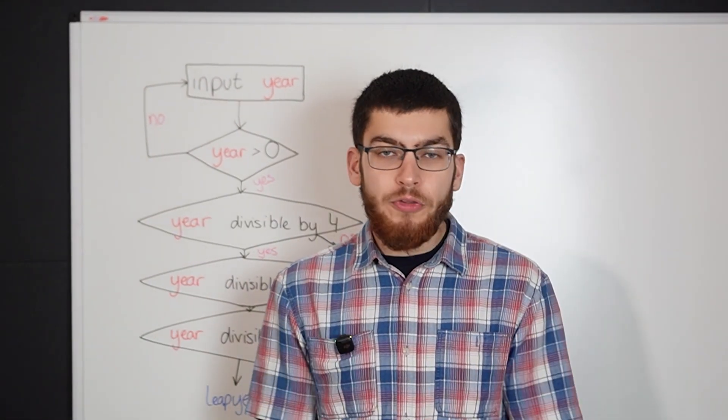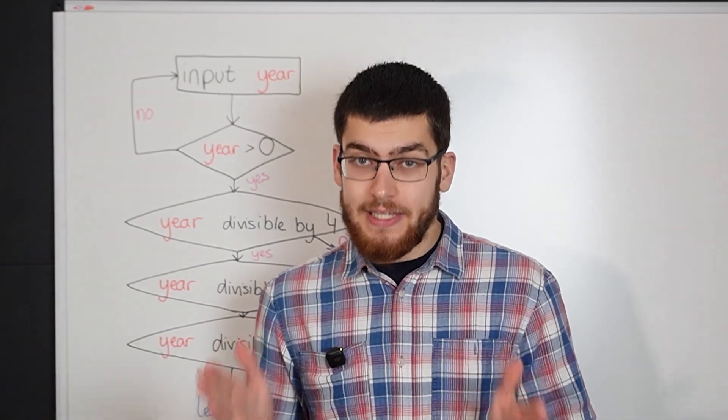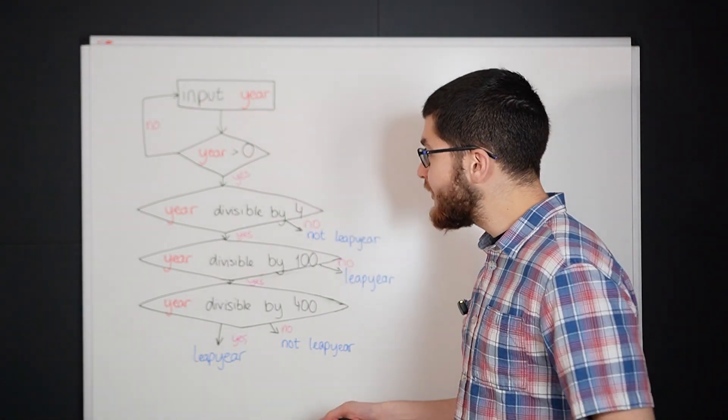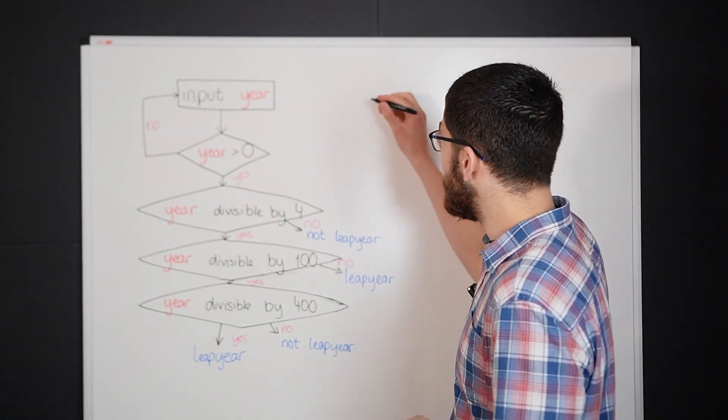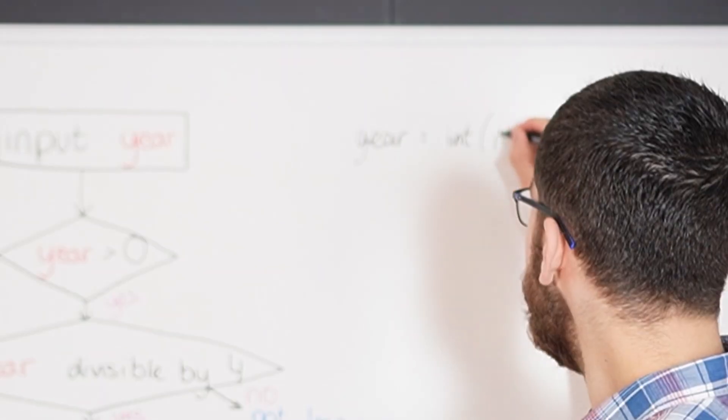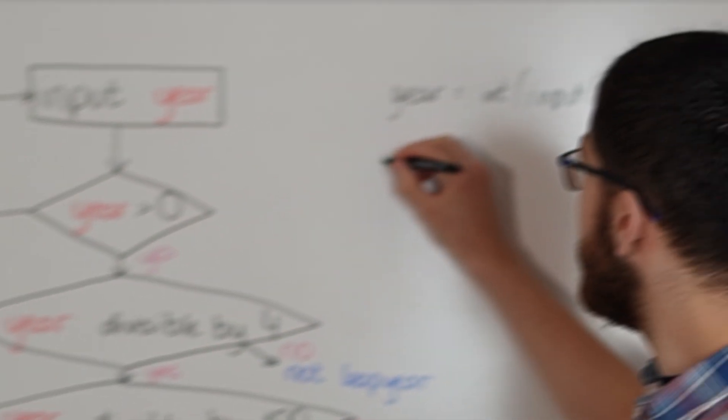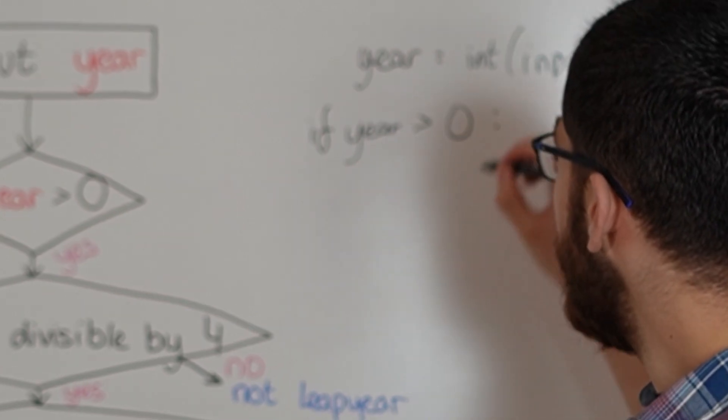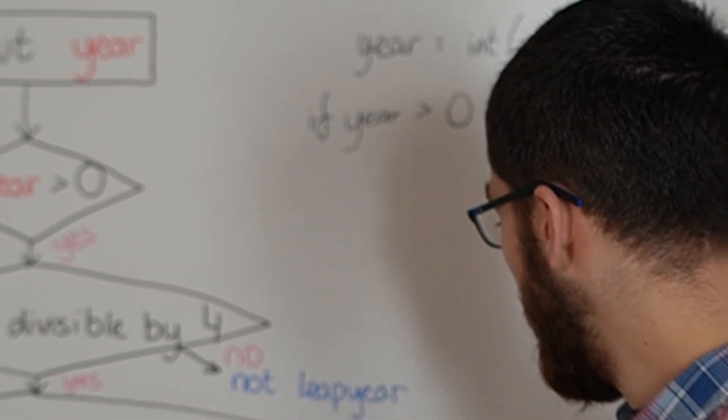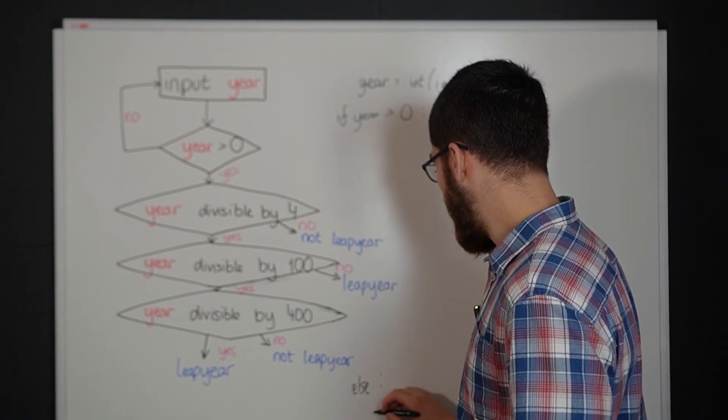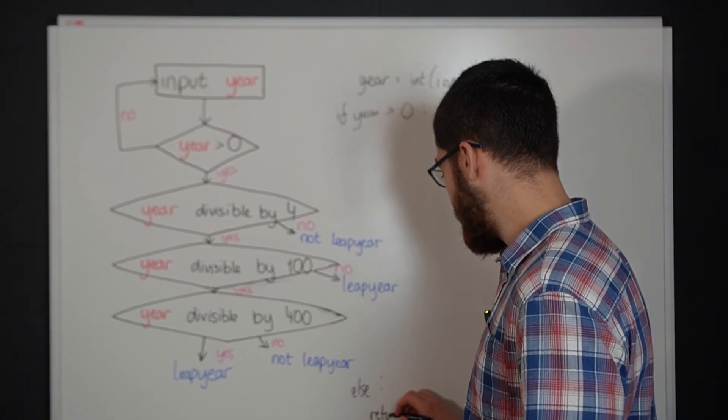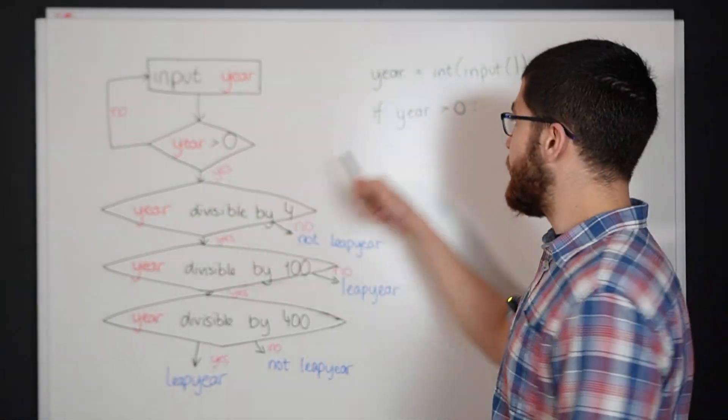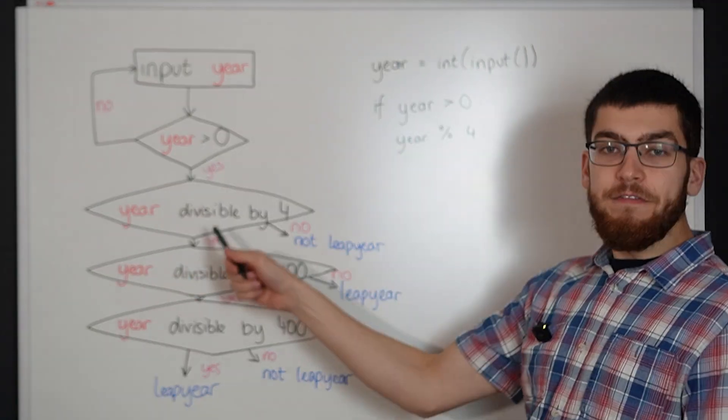Let's say for example that you want to create a program that checks if it's a leap year. You could create a flowchart like this, but to write this in code you literally just translate this into text. So input year becomes year equals int input, and then year greater than zero becomes if year greater than zero then do all this, else you would have no at the bottom so we'll put else return that will return to the top. Input year becomes year equals integer input.